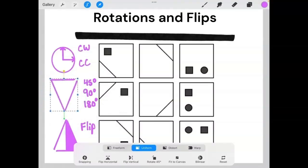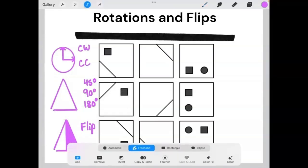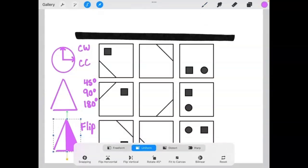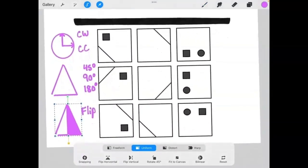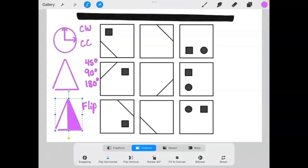You can also do something that is called a flip, and flips can be both horizontal and vertical. A horizontal flip would look like this, and a vertical flip would look more like this.